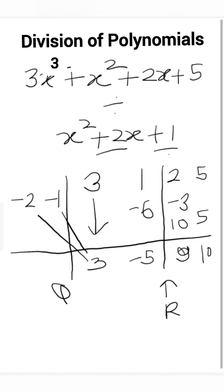First line indicates the quotient. So we will get the quotient of this division 3x minus 5. Second line indicates the remainder, so the remainder will be 9x plus 10. In this way, by using this Vedic math method, we can solve division of polynomial easily.